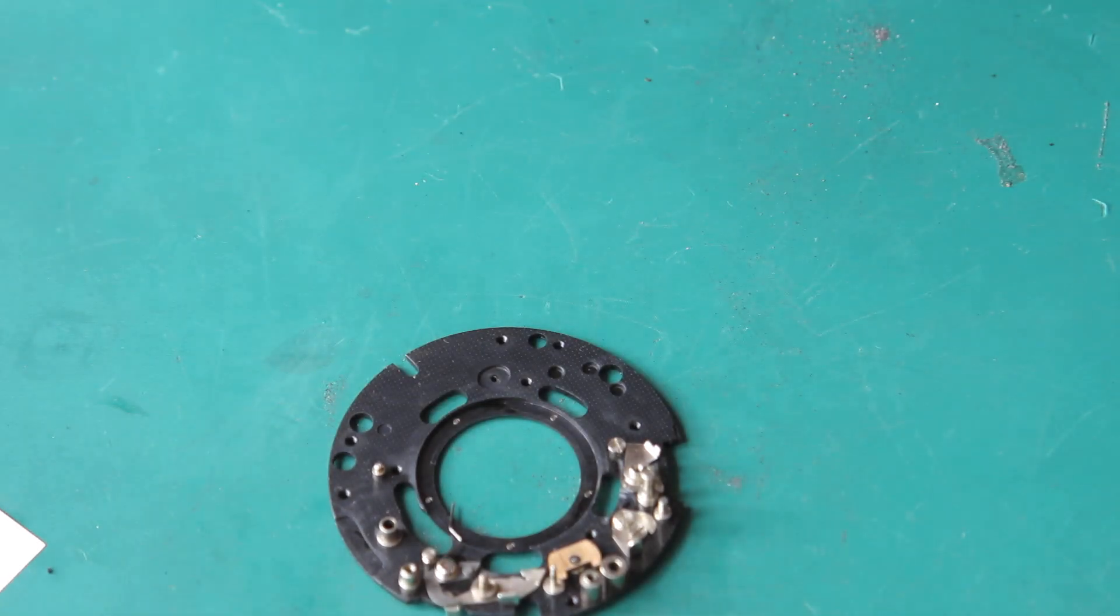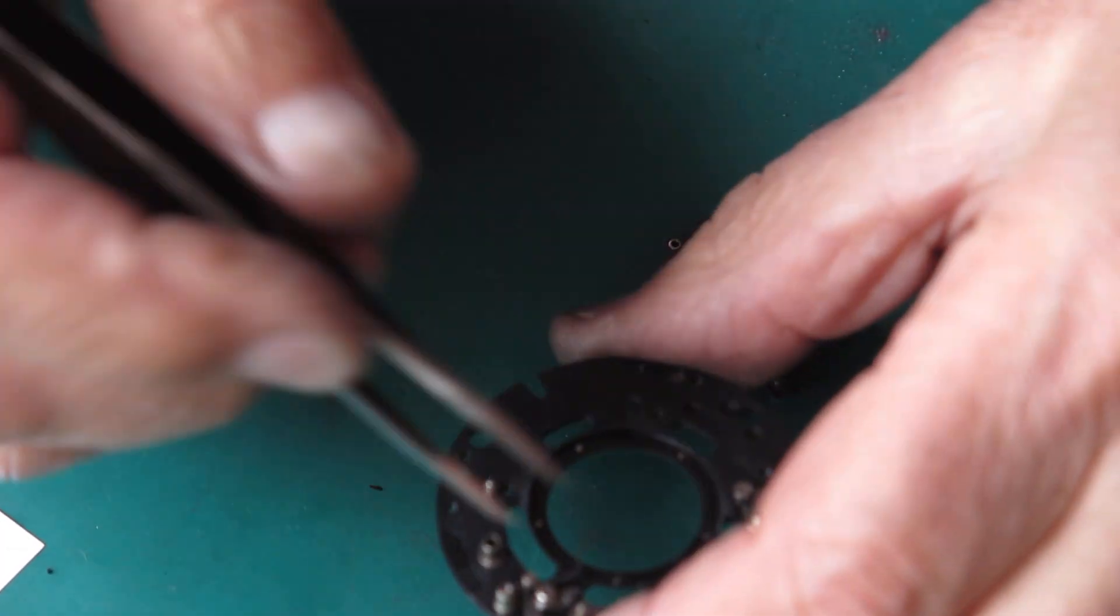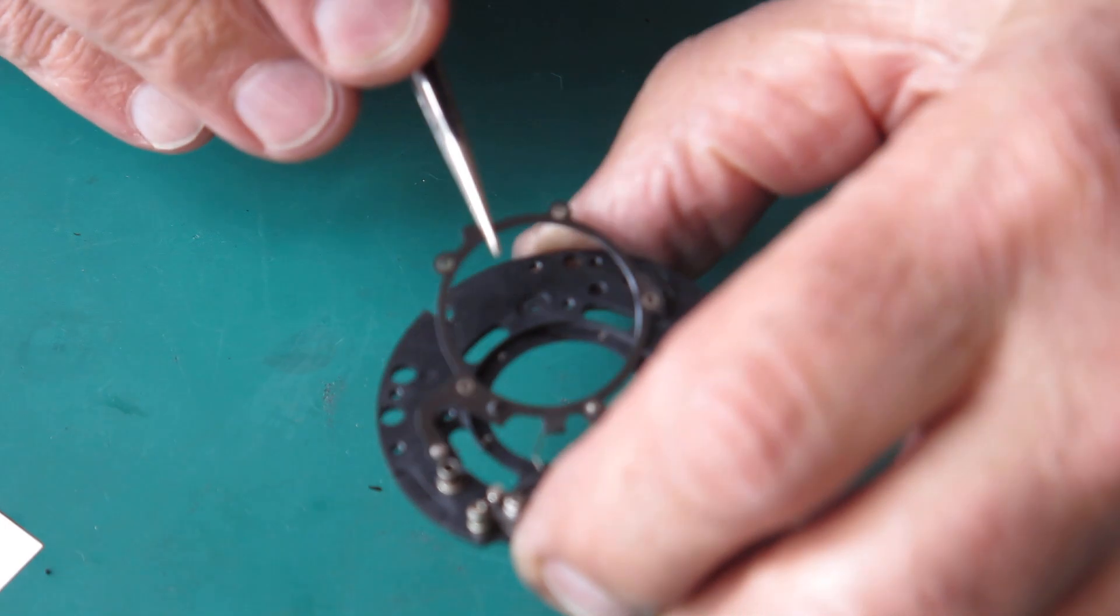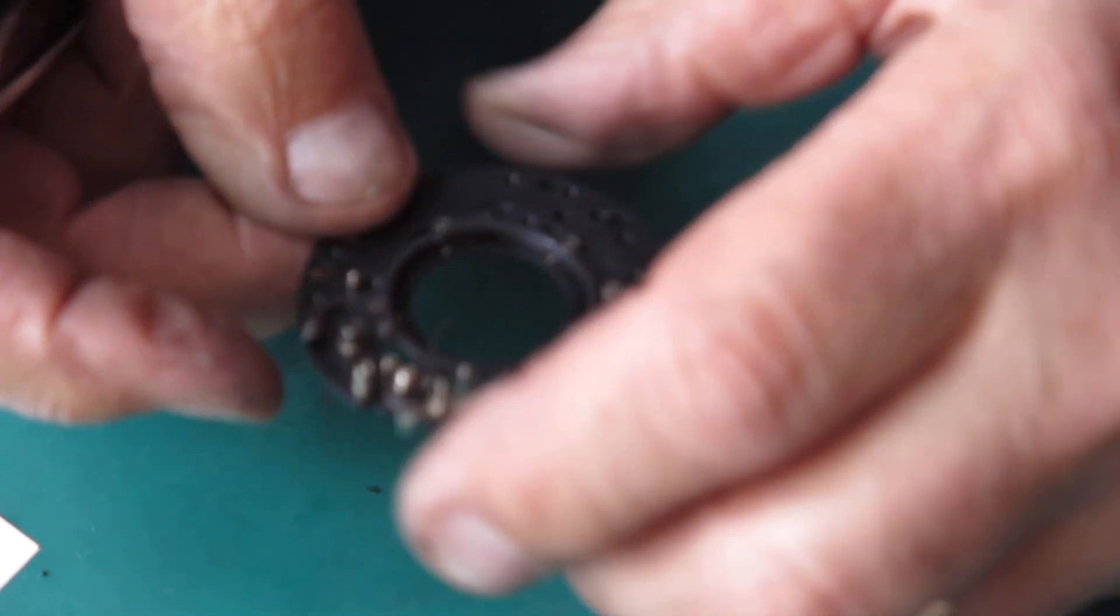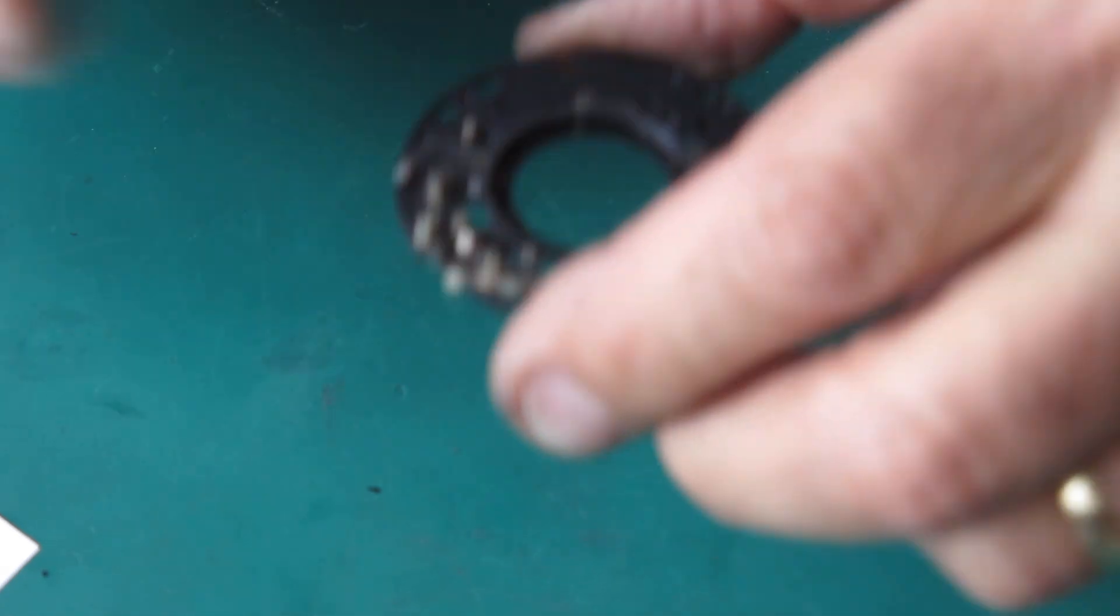So the mechanism plate. Get the blade actuating ring on here. Make sure that none of the levers are tucked underneath it.